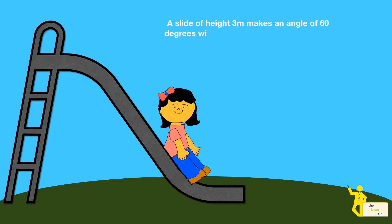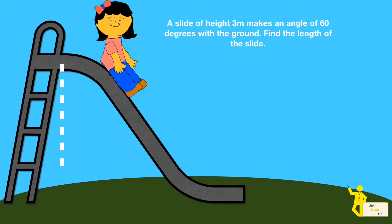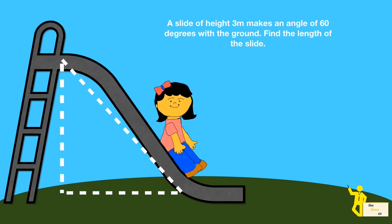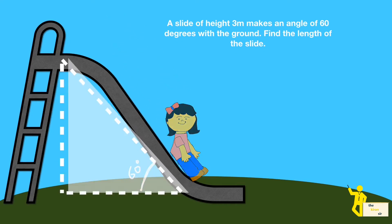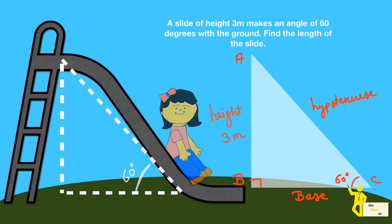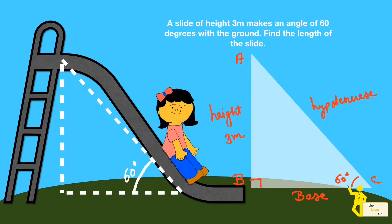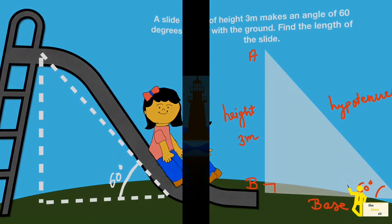The first type of question commonly seen is the slide problem. A slide of height three meters makes an angle of 60 degrees with the ground — find the length of the slide. This is a fairly simple question where the hypotenuse is the slide, forming a single right angle triangle. Since one angle and the height are given, you use sine 60 degrees — that is height upon hypotenuse — to get the answer easily.